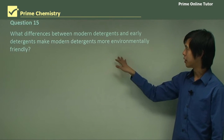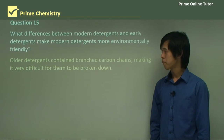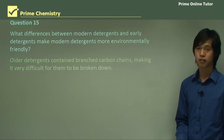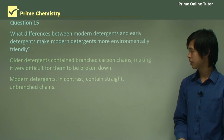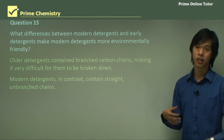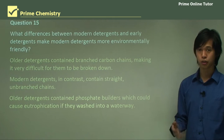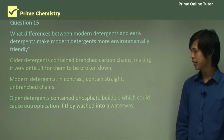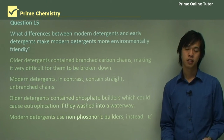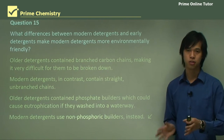What differences between modern detergents and early detergents make modern detergents more environmentally friendly? Older detergents contain branched carbon chains, making it very difficult for them to be broken down in nature. Modern detergents, in contrast, contain straight unbranched chains, similar to organic soap. Older detergents also contain phosphate builders, which could cause eutrophication if they got into a waterway, whereas modern detergents use non-phosphoric builders instead — so even if washed into a waterway, they won't cause eutrophication.